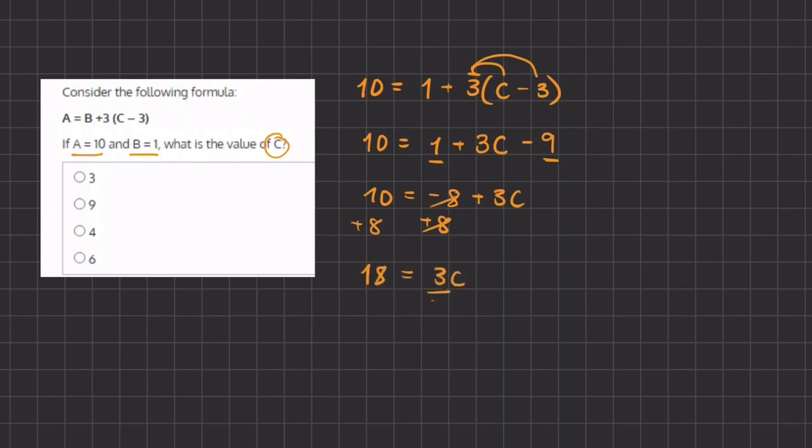So now to isolate c we'll divide 3 on both sides and we are left with 6 equals c. So the value of c will be 6 and d will be our final answer.